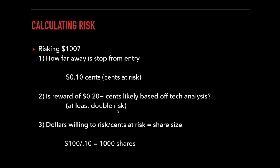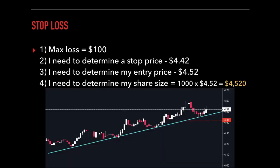The last thing we need to do is take the dollars we're willing to risk — $100 — and divide by the cents at risk, the difference between our entry and stop — $0.10 — and that equals our share size: $100 divided by $0.10 equals 1,000 shares. In order to take this trade, you need an account balance that allows you to take 1,000 shares at $4.52. With a $5,000 account, yes, we can take this trade: 1,000 shares times $4.52 equals $4,520.